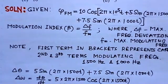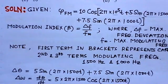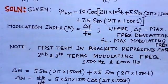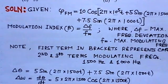We can find delta omega, which is dθ/dt, the instantaneous frequency, by taking the derivative of delta theta. Taking the derivative gives: 5 × 2π × 1500 cos(2π × 1500t) + 7.5 × 2π × 1000 cos(2π × 1000t).